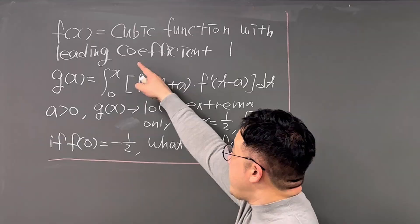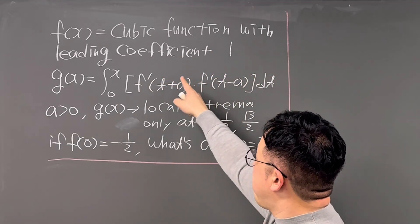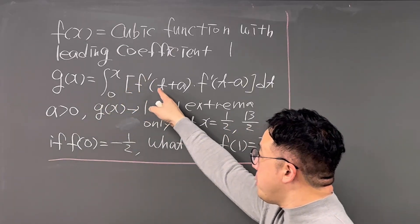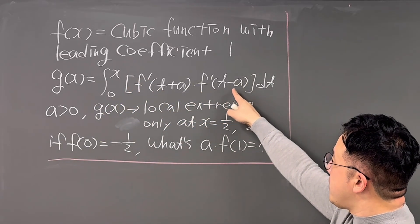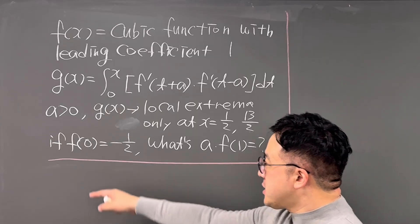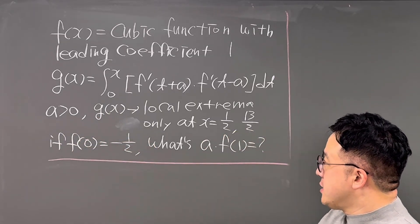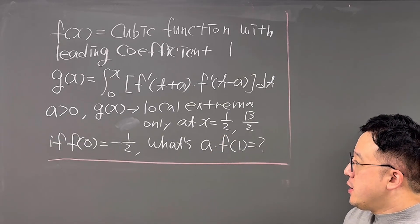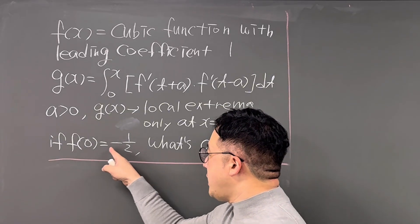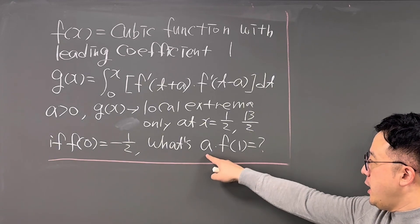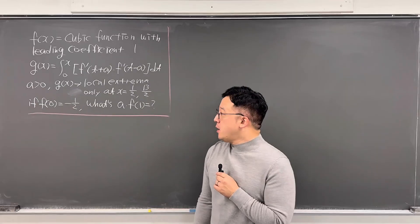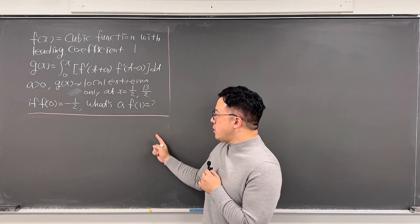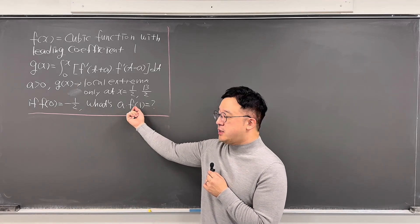Okay, here's the question. f(x) is a cubic function with leading coefficient of 1, and g(x) is the integral from 0 to x of f'(t+a) times f'(t-a) dt. Given that a is greater than 0, g(x) has local extrema only at x = 1/2 and x = 13/2. The condition is: if f(0) = -1/2, what's the value of a times f(1)? So it looks like we need to get the value of a and get the exact function f(x) so that we can plug in 1 and multiply these two values.